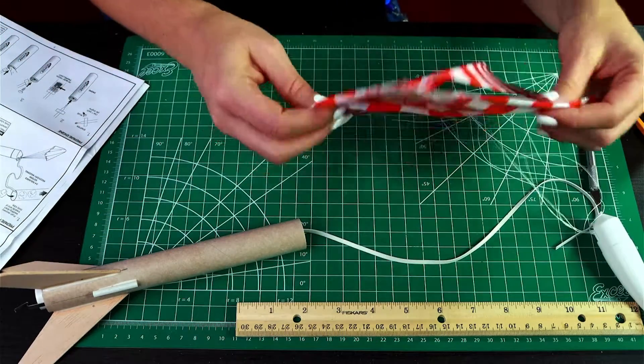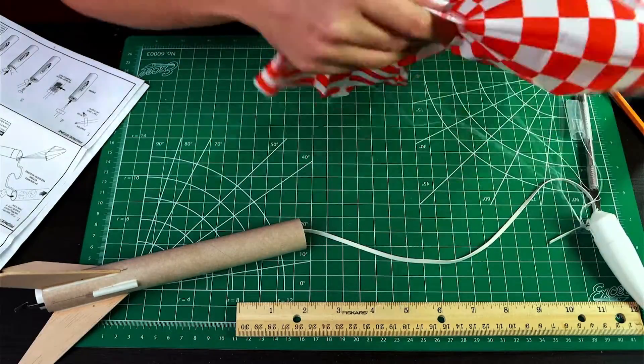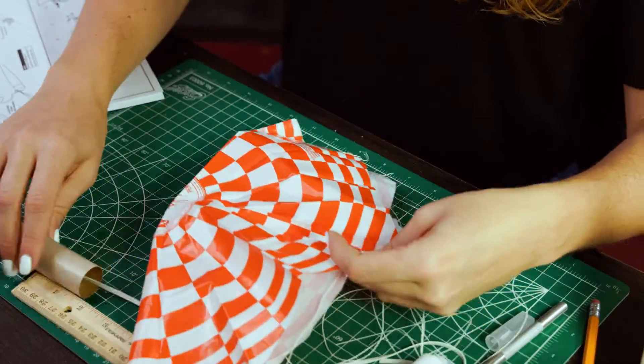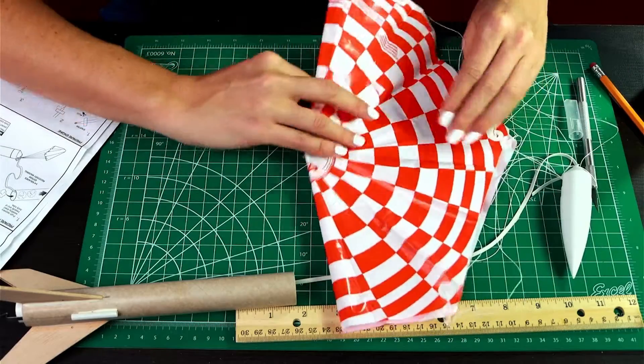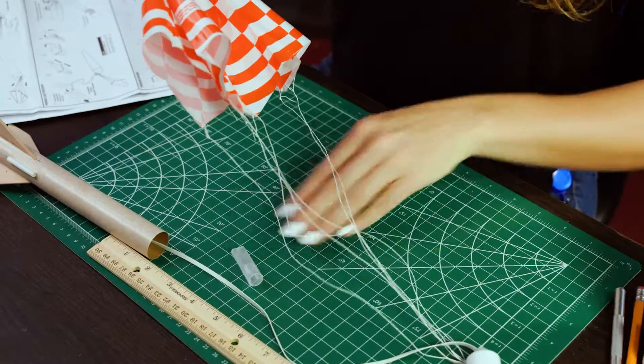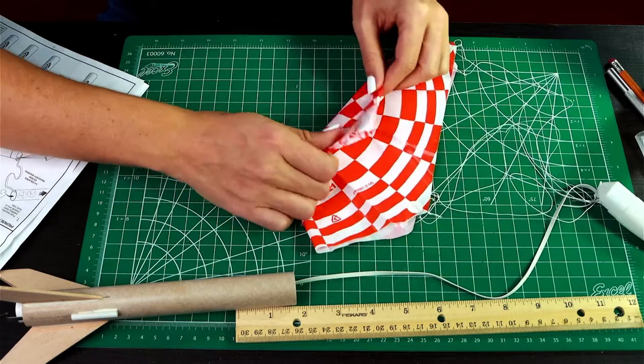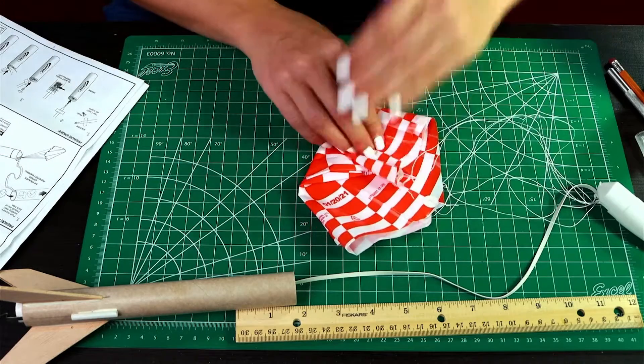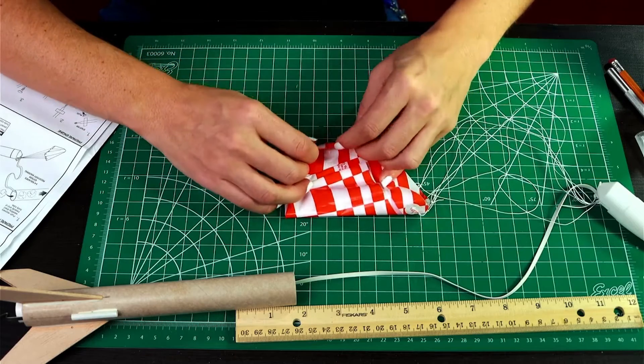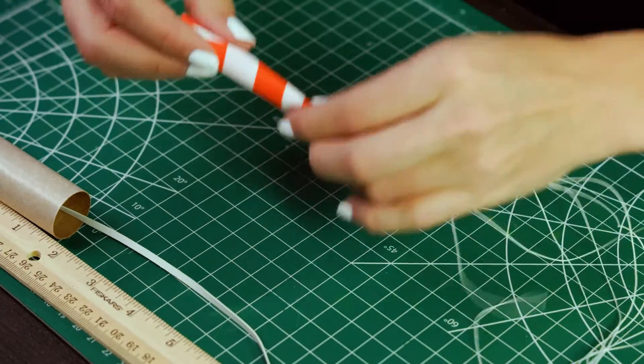And then for folding the parachute, you want to kind of air it out the first time just so it's not sticking together. And then there are lots of ways to fold this. We're going to keep it pretty simple. Just going to fold this in half here. Move my knife. And then I'm going to fold down the top of this and then fold in the sides. And then just roll this.